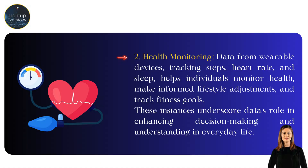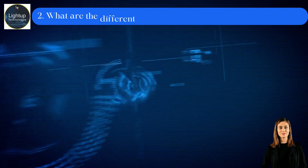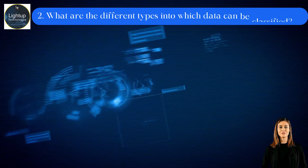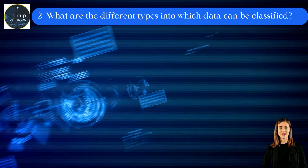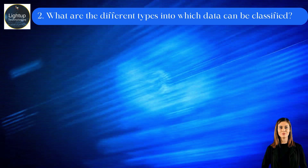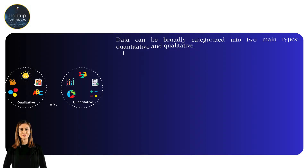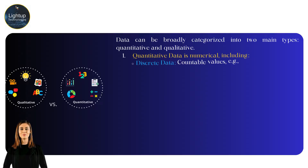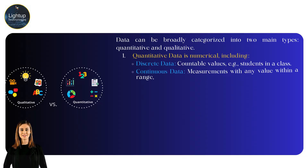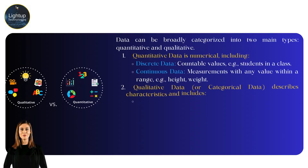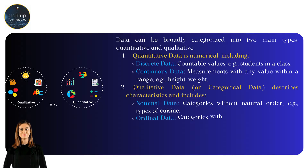These instances underscore data's role in enhancing decision-making and understanding in everyday life. What are the different types into which data can be classified? Data can be broadly categorized into two main types: quantitative and qualitative.